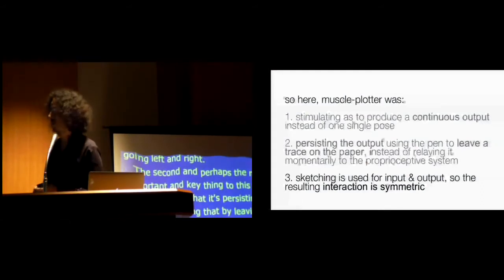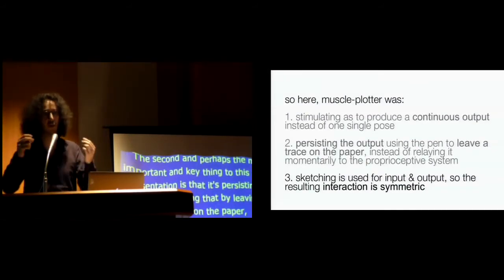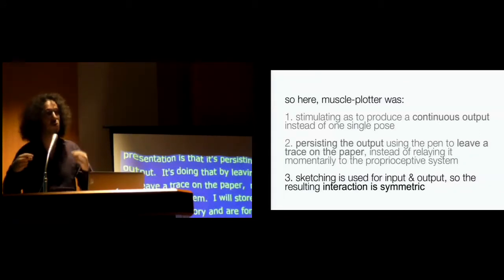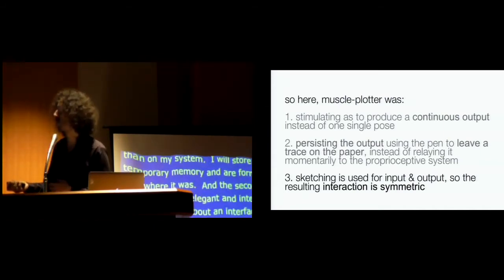And that's how we actually enable applications such as this one. So I'm going to play this again, and I'm going to explain you a little bit what's happening when these two-card designers are working. So we already saw kind of this part, right? So we're feeling the streamline because it's guiding my muscles here left and right. What's in reality happening is Muscleplotter is doing three things. The first one is it's stimulating as to produce a continuous output. So we're not talking about EMS systems that do one pose and then go back, but about EMS systems that produce a series of values over time.